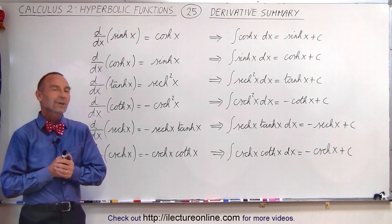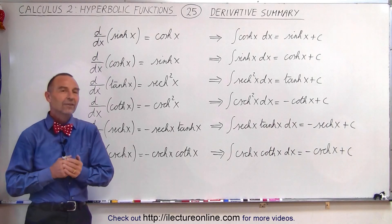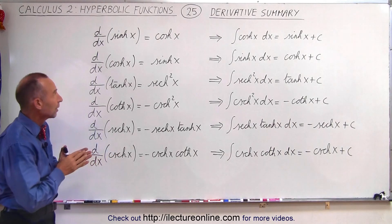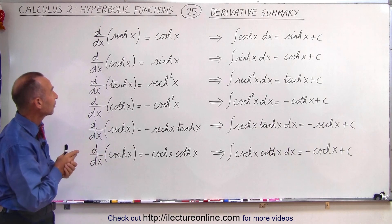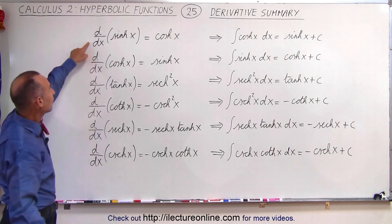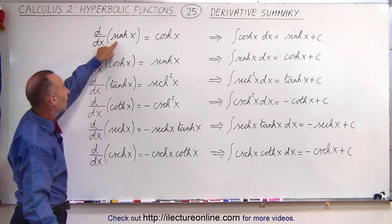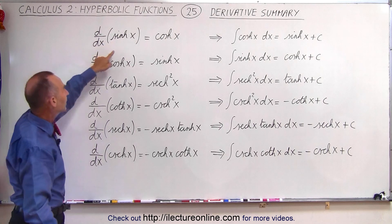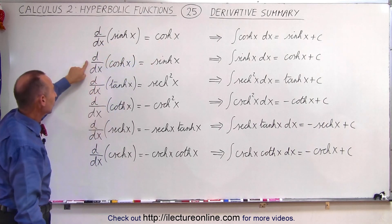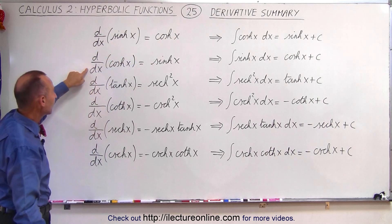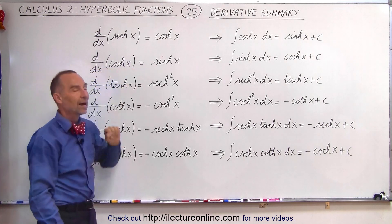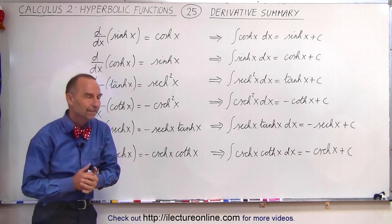Welcome to ElectronLine. Now let's summarize what we've learned so far about the derivatives of the hyperbolic functions. When we take the derivative of the hyperbolic sine, we get the positive hyperbolic cosine, and also when we take the derivative of the hyperbolic cosine, we get the positive hyperbolic sine.